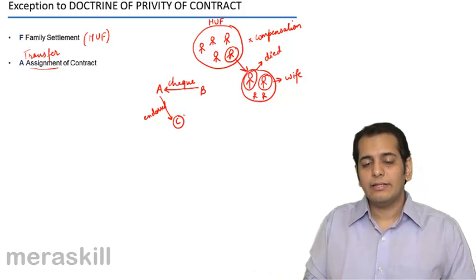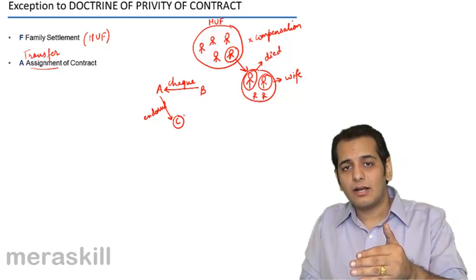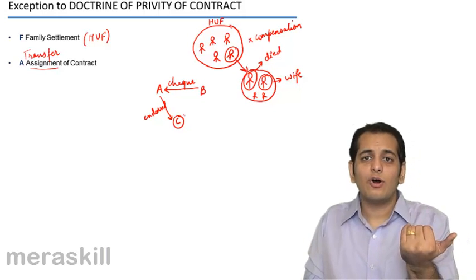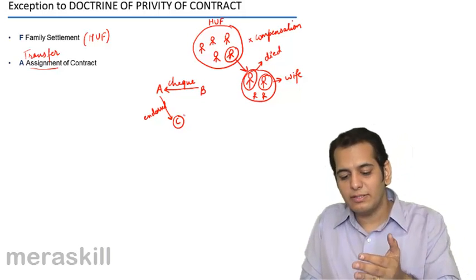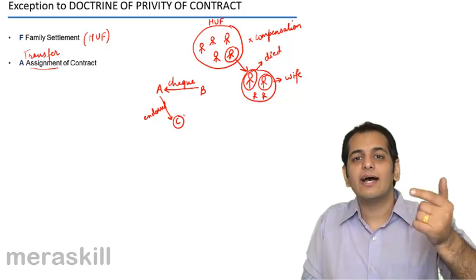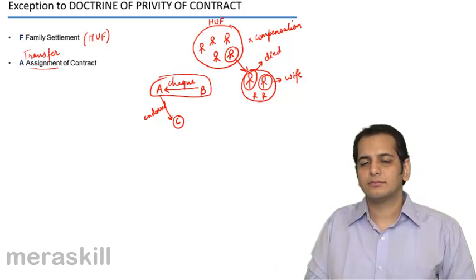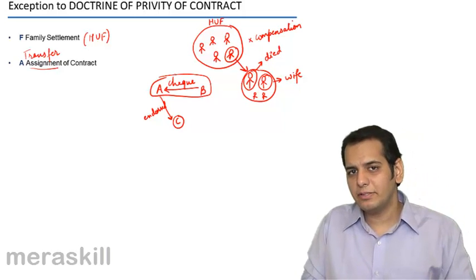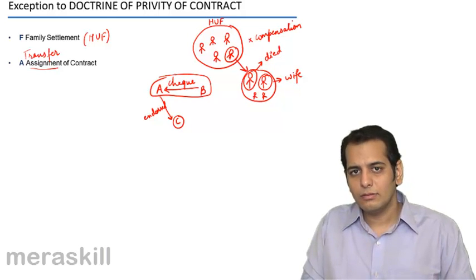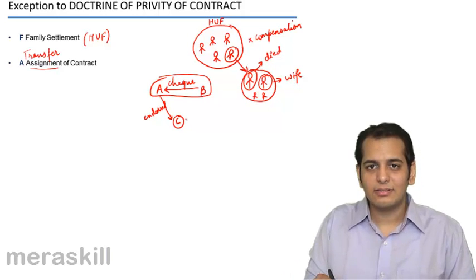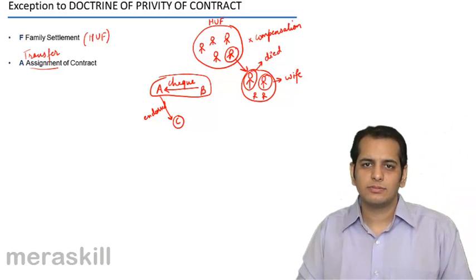Now when A endorses the check to C, you can say that A has transferred his right to C — that is, the right of cashing the check, the right of getting cash from B, has been transferred from A to C. That means he has assigned the contract. The original contract was between A and B, however A later assigned the contract by endorsing the check to C. Now if C does not get payment from B — let's say the check bounces, the check is dishonored.